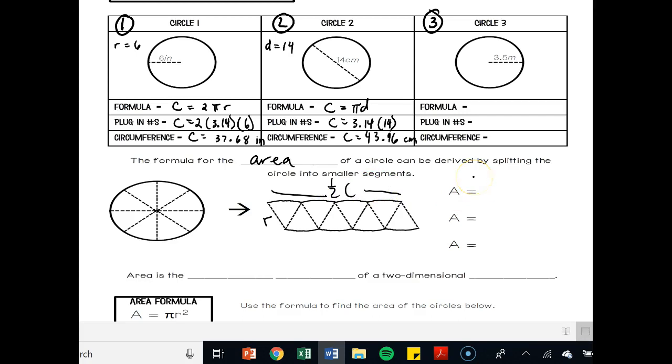So the area of a circle can be derived as one half the circumference times the radius. And now we can break this one half the circumference. Well, we can break that down into one half the circumference is simply times 2 pi r times the radius. And then one half times 2 actually is just 1. So we get pi times r times r. Or we get our area formula as just simply pi r squared. r times r giving us r squared.